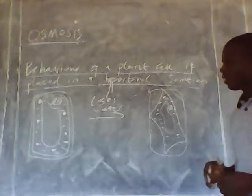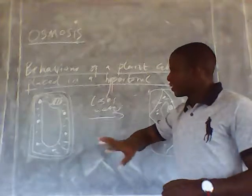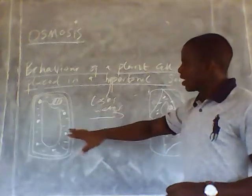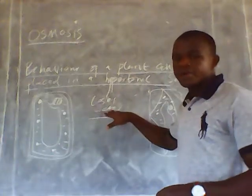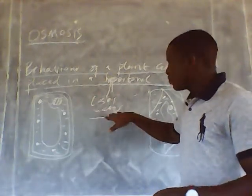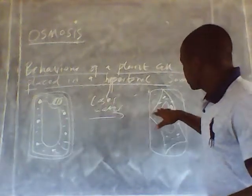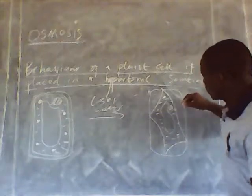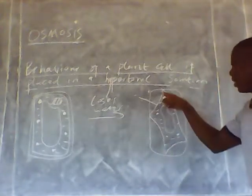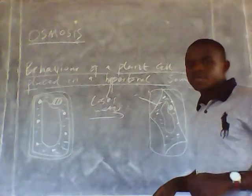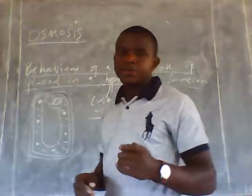The process of plasmolysis occurs when a plant cell is placed in a hypertonic solution. The plant cell loses water as water molecules move into the solution. As it loses water molecules, the cell membrane detaches from the cell wall, and this process is referred to as plasmolysis.